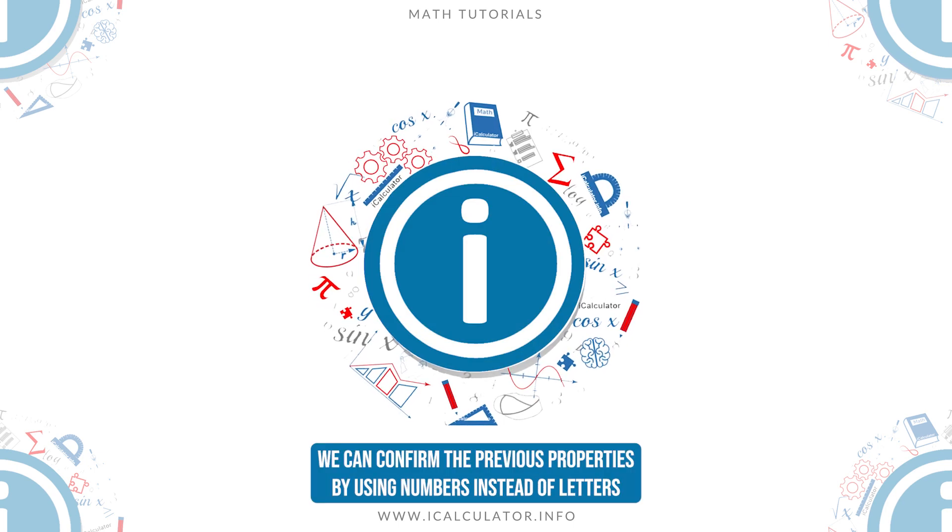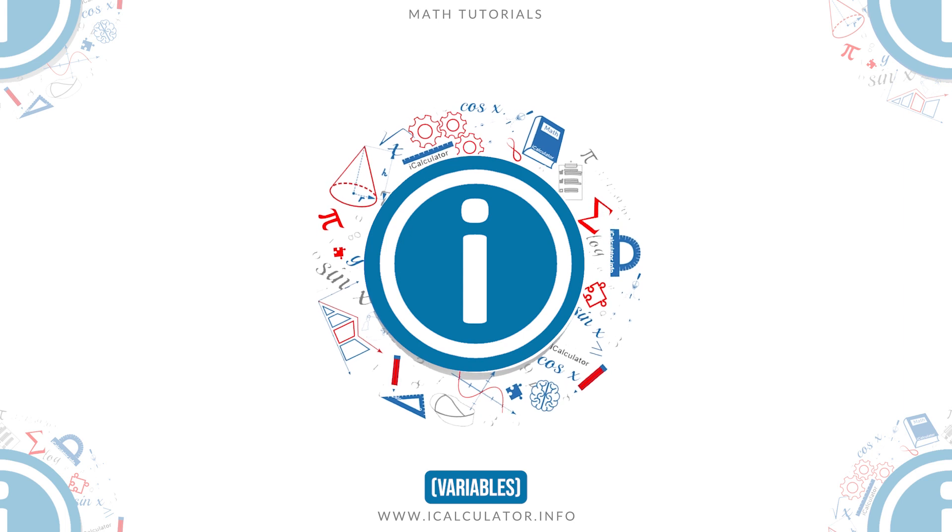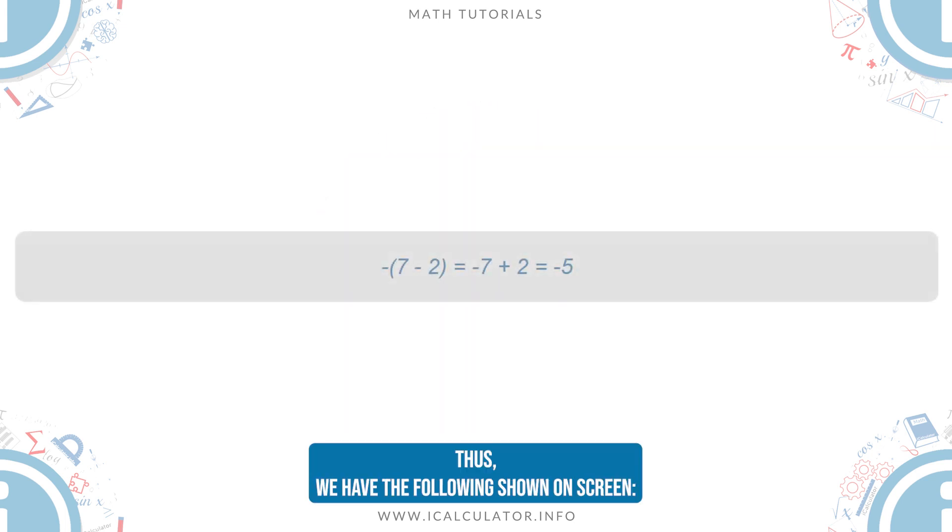We can confirm the previous properties by using numbers instead of letters, or variables. Thus, we have the following shown on screen.